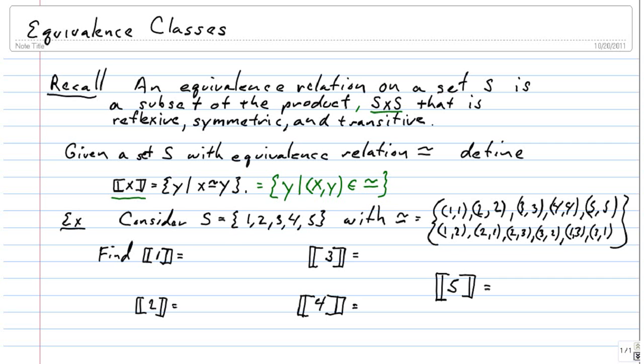So let's do an example. Consider this set S equal to 1, 2, 3, 4, 5. So a very simple set. And here's an equivalence relation defined on this set. You should actually check and make sure that it is an equivalence relation. We'll tick off a few of the things.